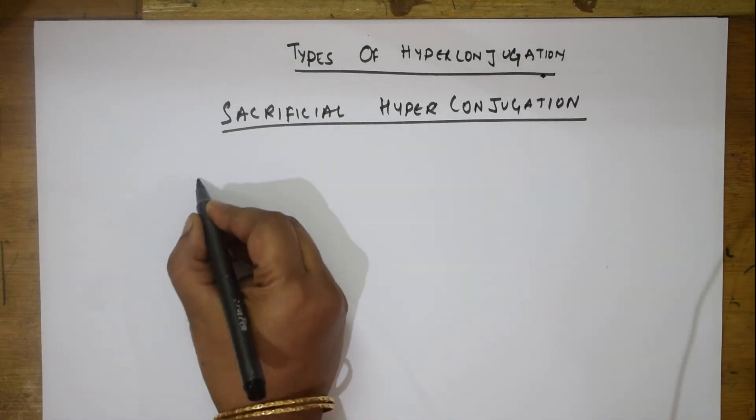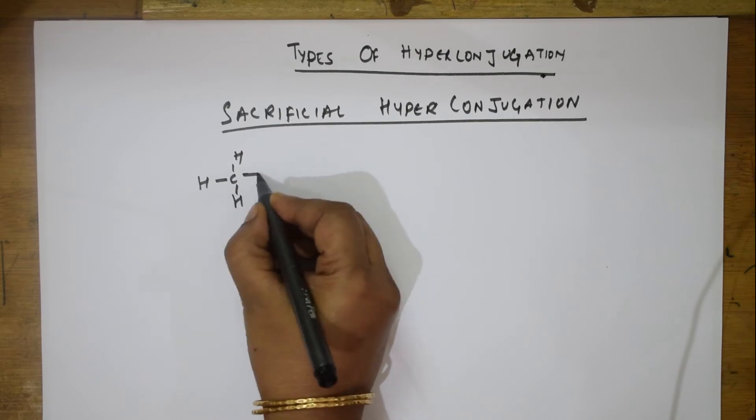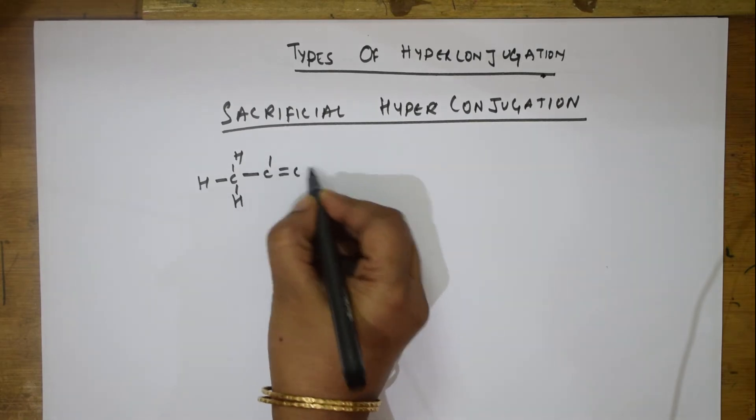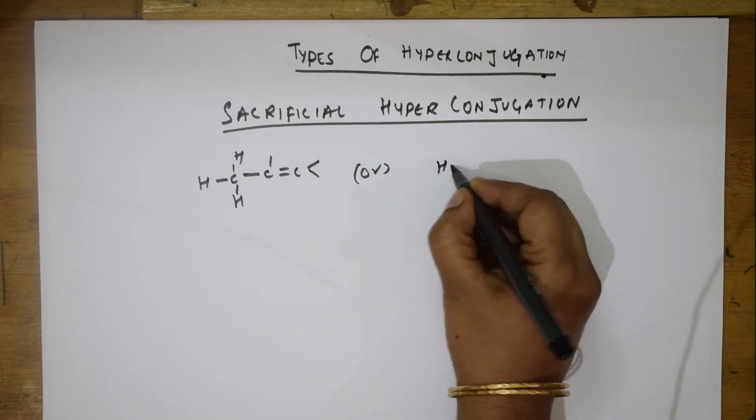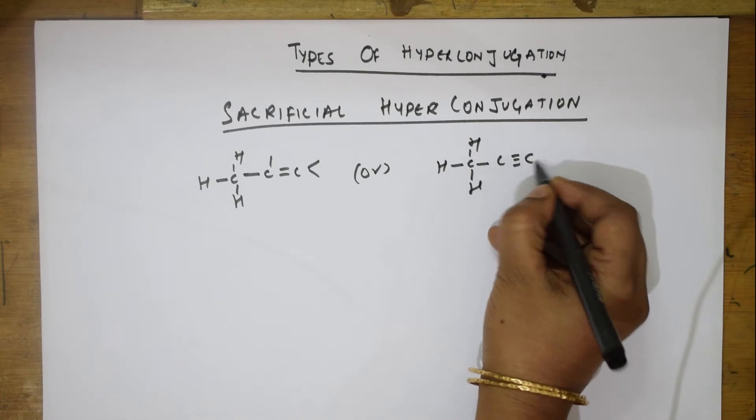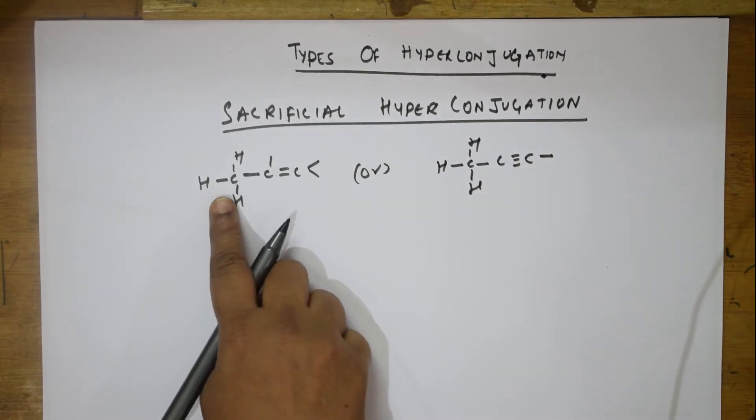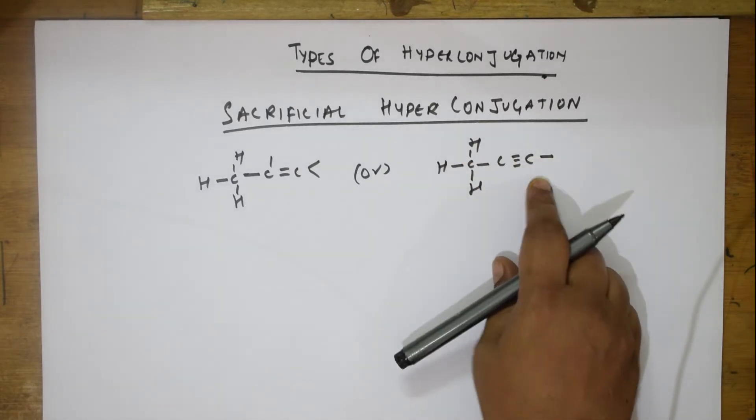When I have to take an example, let me take an example. H-C=C or you also have C≡C. What did I say? It is the attachment of the alkyl group to the double bond or attachment of the alkyl group C-H-C to the triple bond.